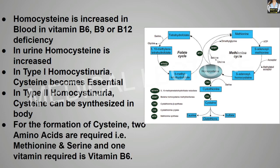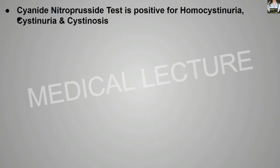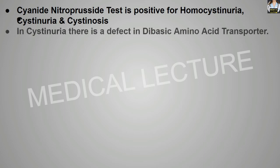For the formation of cysteine, two amino acids are required — methionine and serine — and one vitamin, vitamin B6. The cyanide nitroprusside test is positive for homocystinuria, cystinuria, and cystinosis.